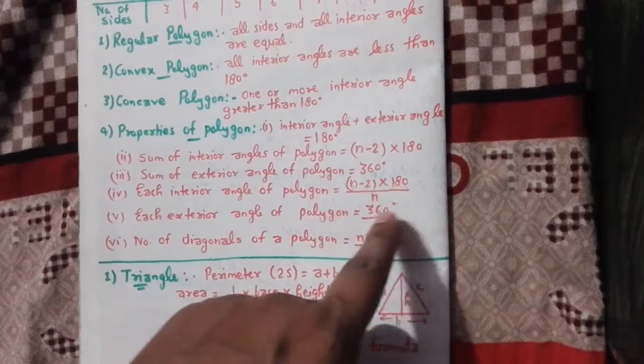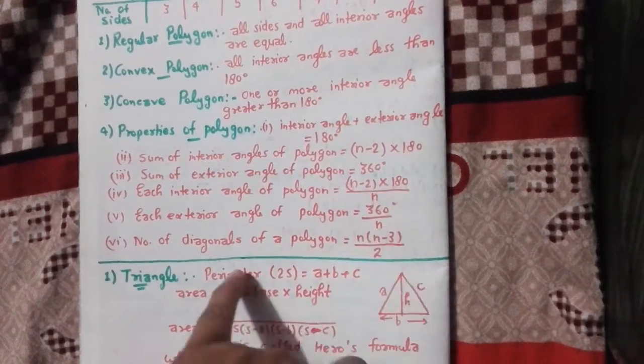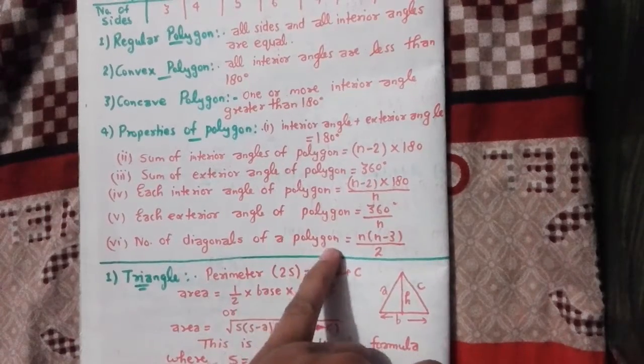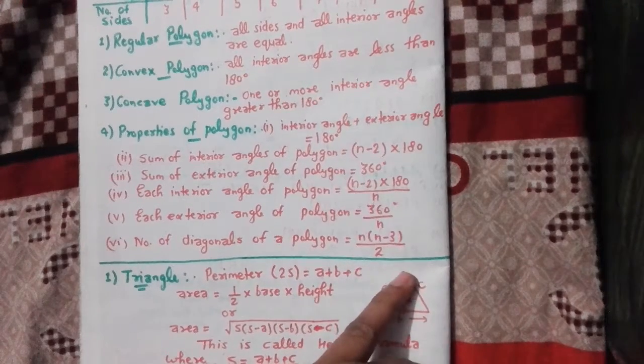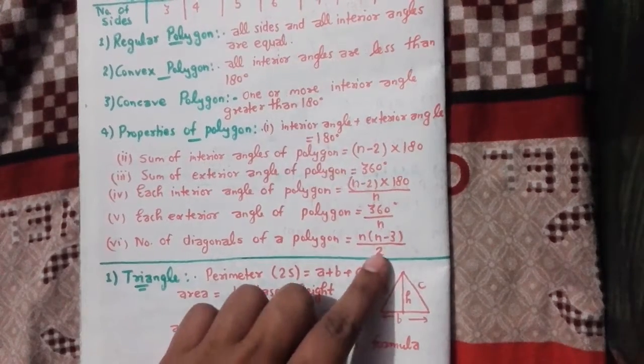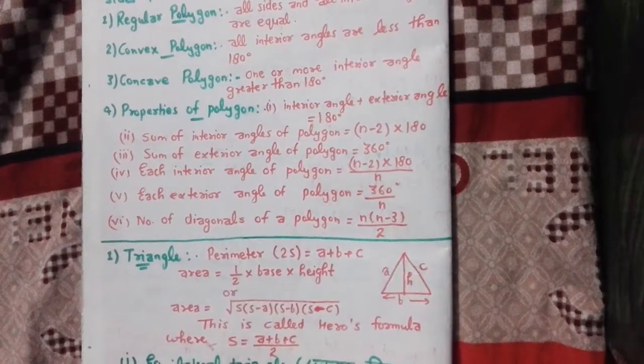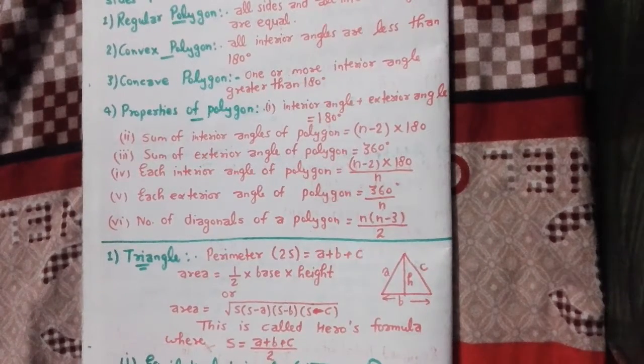Each exterior angle of polygon: sum divided by number of sides. Number of diagonals of polygon: n(n-3)/2. This way we can write triangles. In the next video, we'll learn about triangles in mensuration.